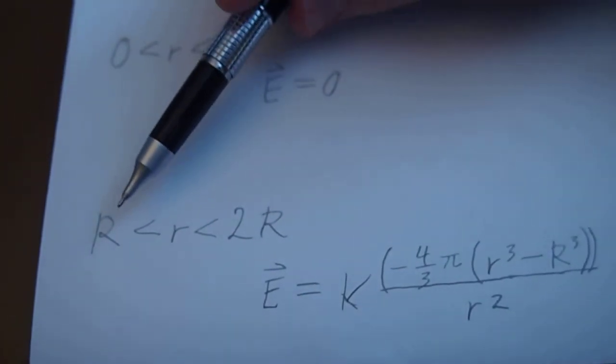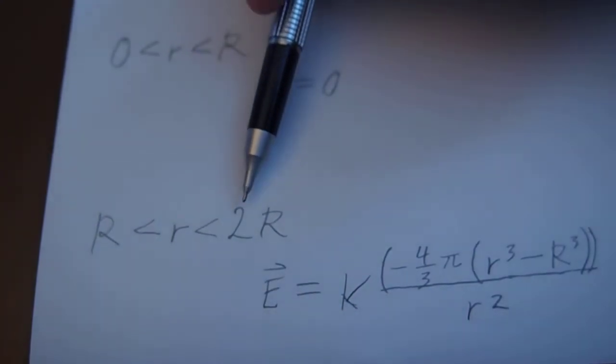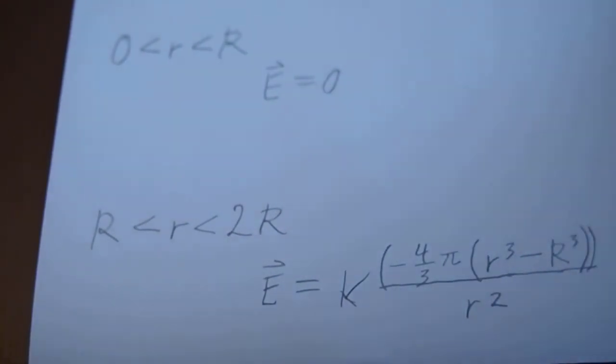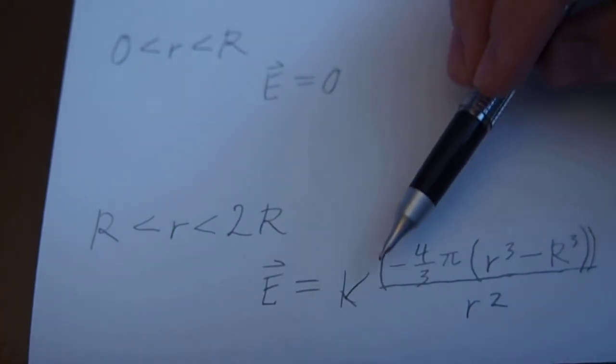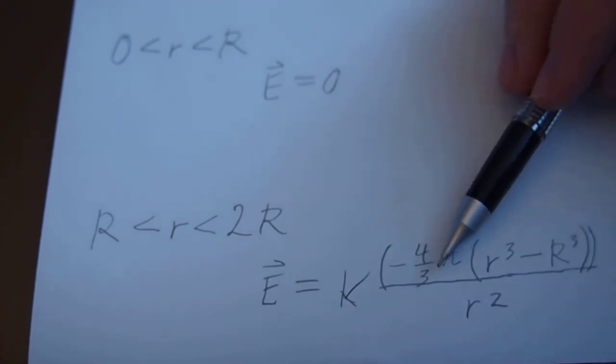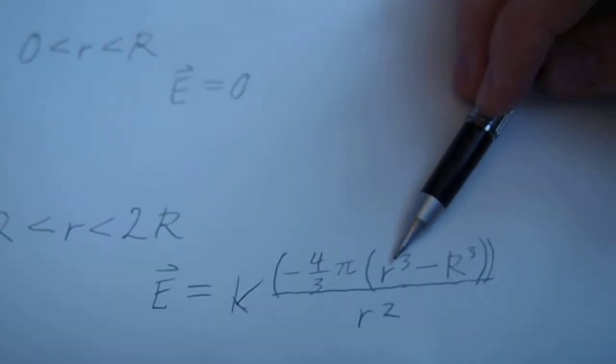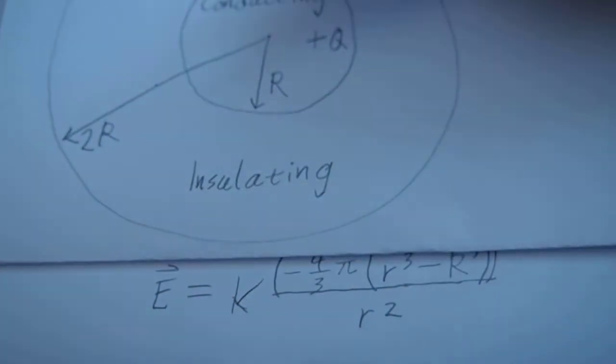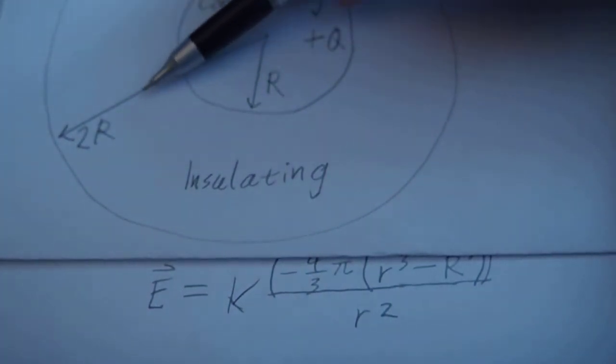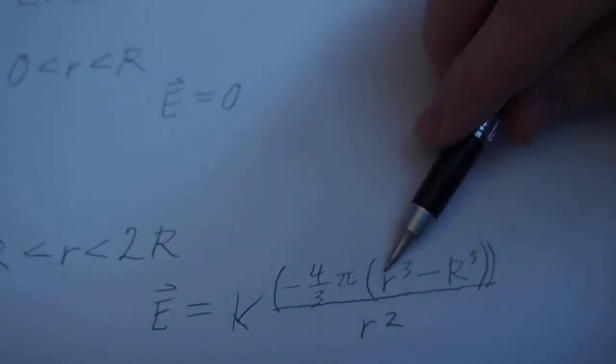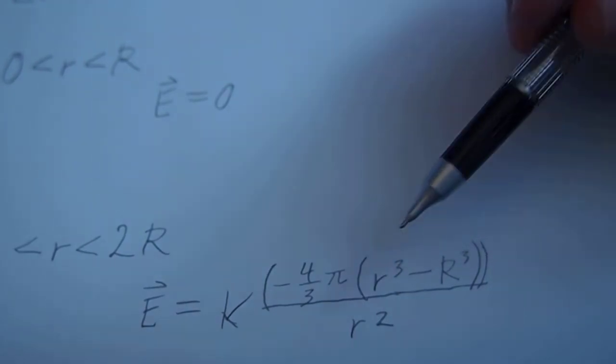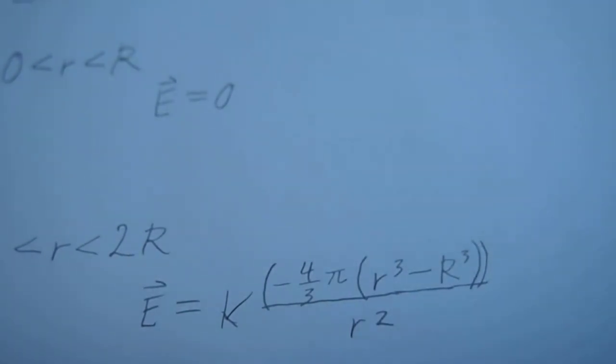For the next one, big R is less than R is less than 2R. So that gives us actually k times negative 4 thirds pi times the changing radius, the variable radius, which is going to be somewhere in between here and here. That's where little r is right now. Minus R, which is the radius of the inner sphere, over R squared. Now, this is just our standard electric field formula applied to spheres.